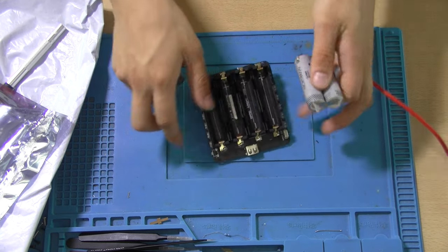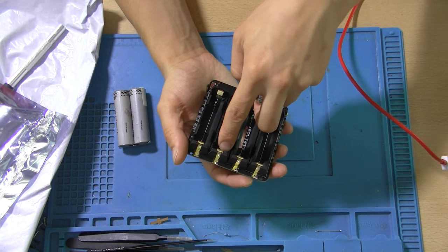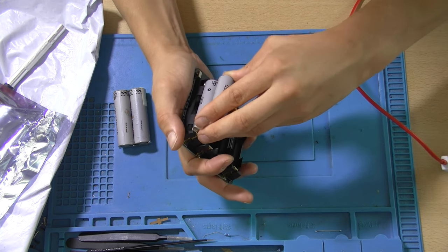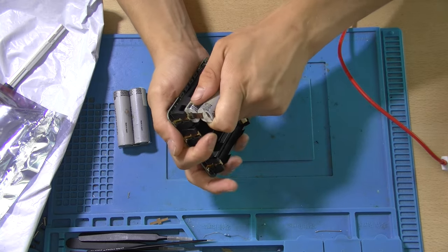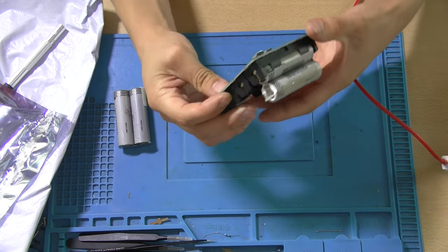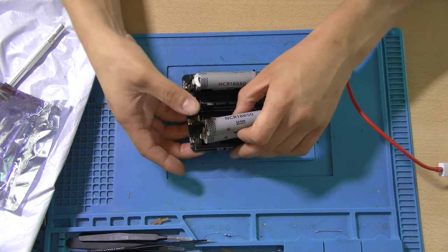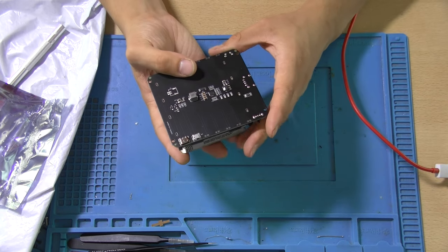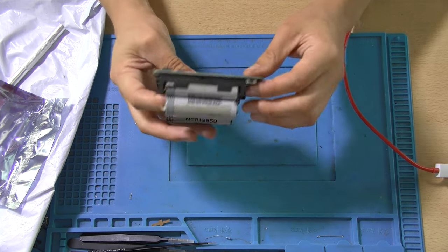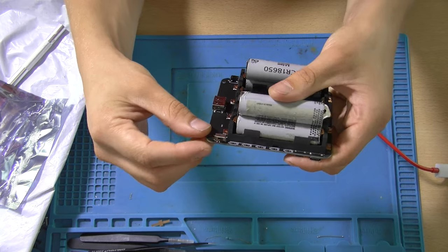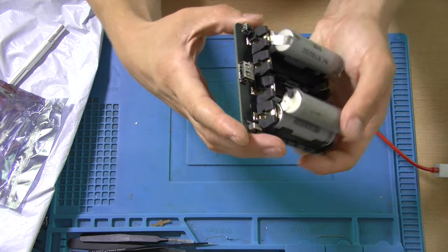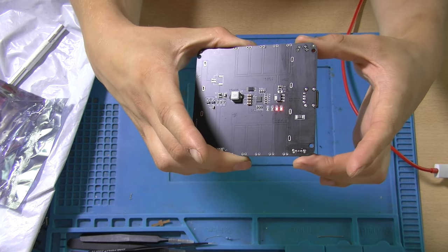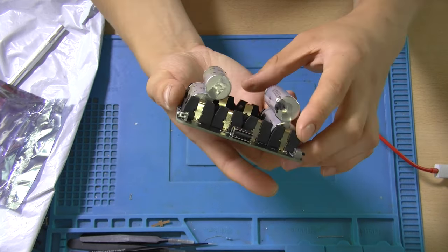So let's actually get some 18650s and try to charge my phone with it. So these are in parallel, which shouldn't really matter too much. So the positive side is on that side and the negative side is on the other side. So let's insert them into the casing. The only downside of this PCB is that the electronics are exposed at the bottom.